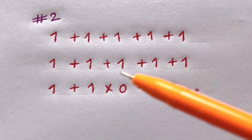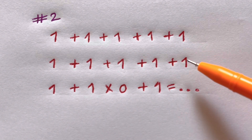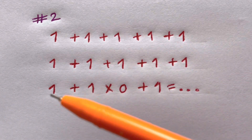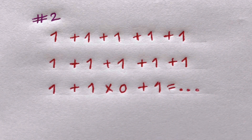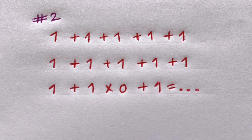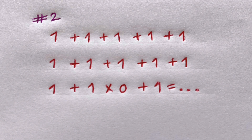Number two: one plus one plus one plus one plus one plus one plus one plus one, plus one times zero, plus one — what is that equal to? You have 10 seconds to answer this question. Pause the video and try it yourself.